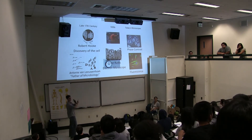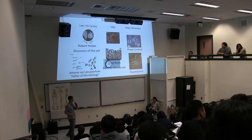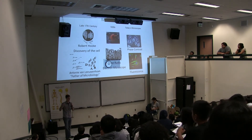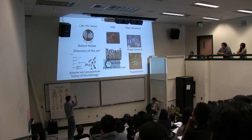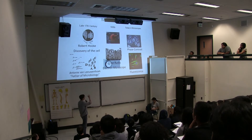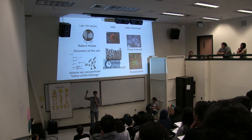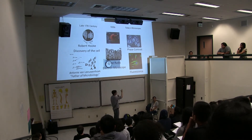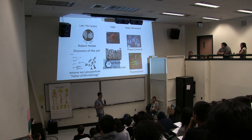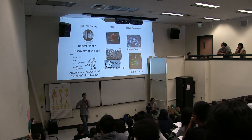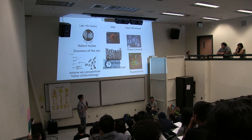A bit of background: microscopy began in the 17th century when they started looking at the same kind of technology used for telescopes but applied to cells and living things. They first discovered cells and bacteria, and basically the same technology has been used in the laboratory since then - just with slightly fancier tricks for better contrast and to look at different things within cells. Except for electron microscopy discovered in the 1930s, the same technology has been around for hundreds of years, which is really cool.